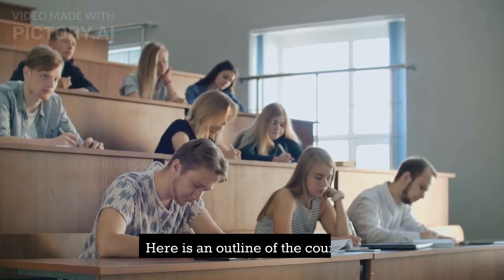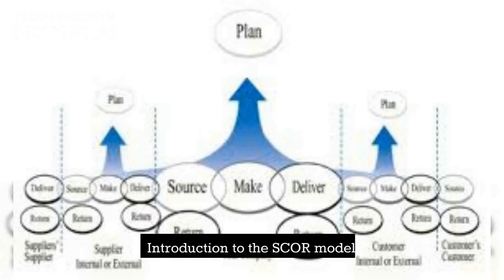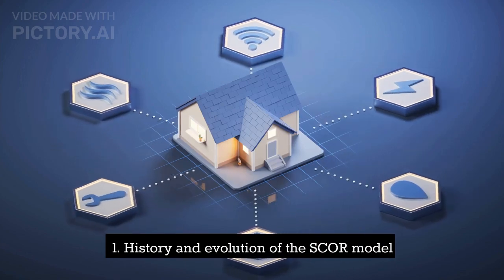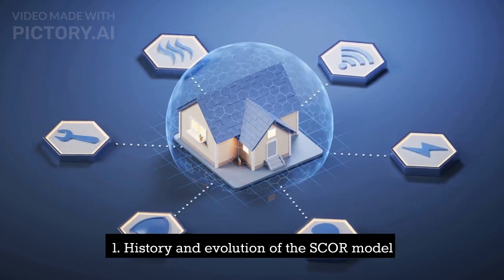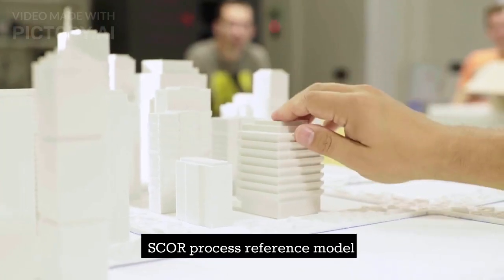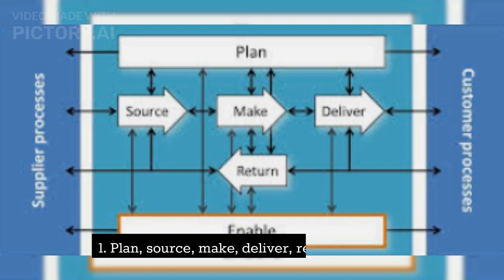Here is an outline of the course: Introduction to the SCOR Model; History and Evolution of the SCOR Model; Key Elements and Components of the SCOR Model. The SCOR Process Reference Model covers Plan, Source, Make, Deliver, and Return processes.